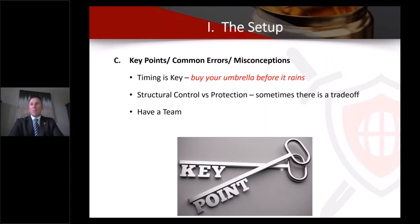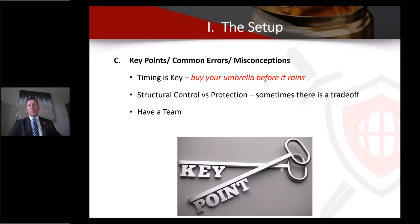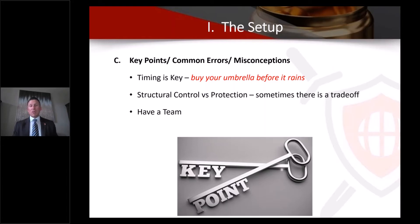Understand that sometimes there's a trade-off between structural control and protection. If you have different entities and multiple people involved, you may have to give up a little control to create separation. A good example: if you create a spendthrift trust for asset protection — you can't do a self-settled trust in Florida, but you can in offshore or other jurisdictions — if you retain control, a court can later compel you to make those assets available. If you literally give up some level of control, that's a much stronger protection.